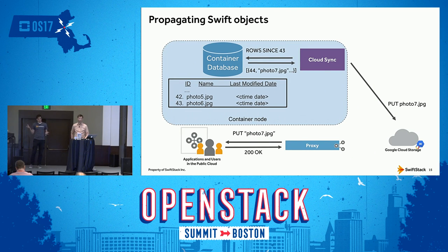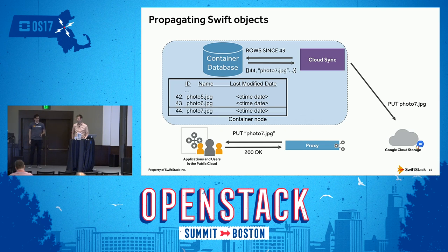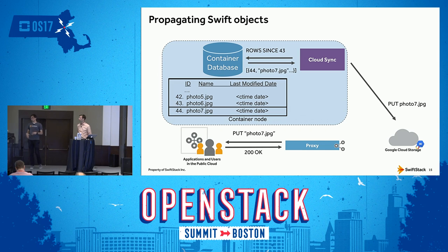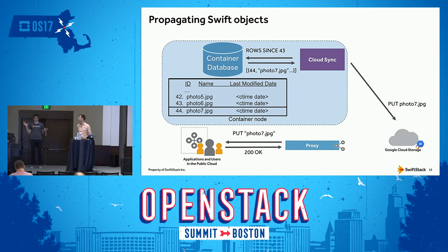Let's walk through how the Cloud Sync daemon leverages this. We place a new photo into our Swift cluster. The database currently has rows 42 and 43. The new photo shows up, it's added to the container database as row 44. The Cloud Sync daemon requests the container database: I've got everything up to row 43, what am I missing? Row 44 is returned, the daemon knows it's a new object that needs propagating, and places it into Google Cloud Storage or Amazon S3 or another S3-compatible cloud.